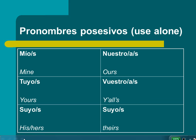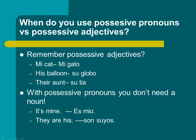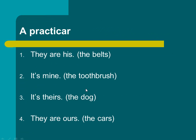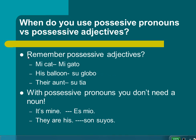Let me show you some examples and the difference between possessive pronouns and possessive adjectives. Possessive adjectives, you remember from the family chapter. My cat is 'mi gato,' his balloon is 'su globo,' their aunt is 'su tía.'